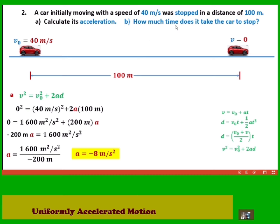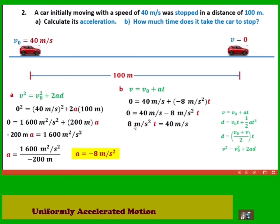Part B: how much time does it take the car to stop? We use equation 1, which involves time, because we have initial speed, final speed, and the acceleration solved in part A. Substituting: final speed is 0, initial speed is 40 meters per second, and acceleration is negative 8 meters per second squared. Solving for t, we transfer terms and divide both sides by 8 meters per second squared, canceling units. The time it takes for the car to stop is 5 seconds.